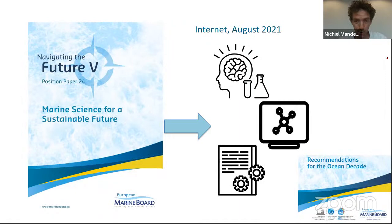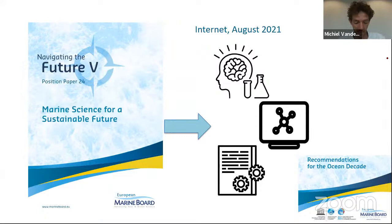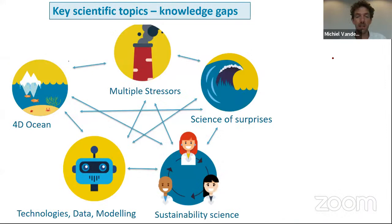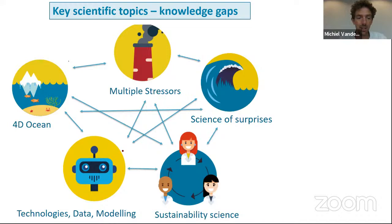Now in this webinar in August 2021, I would like to show you ways in which Navigating the Future 5 has inspired science and science policy over the past years, and hopefully will continue doing so for the next decade. I'll give an overview of the main chapters and key scientific topics identified in NF5: a chapter on the four-dimensional ocean, a chapter on multiple stressors pressing upon the ocean, a chapter on the science of surprises relating to extreme events, a chapter on technologies, data, and modeling, and a chapter on sustainability science — five chapters, five knowledge gaps.